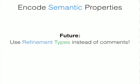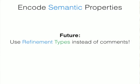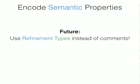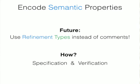This is how I see the future of refinement types in Haskell: instead of having comments to define semantic properties, we put them into the type system. To do this we need to perform specification and verification of these kinds of properties.